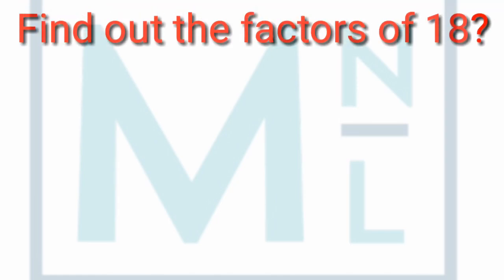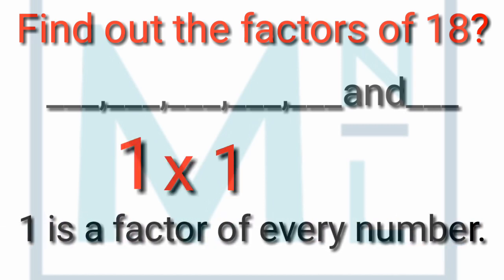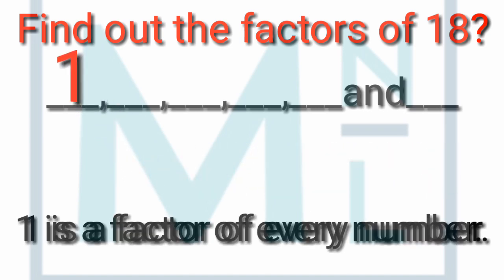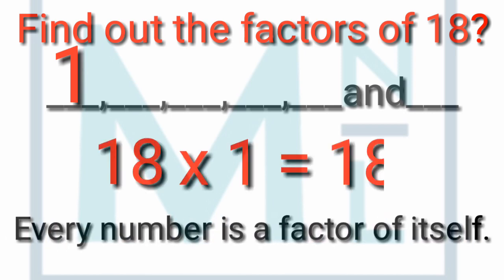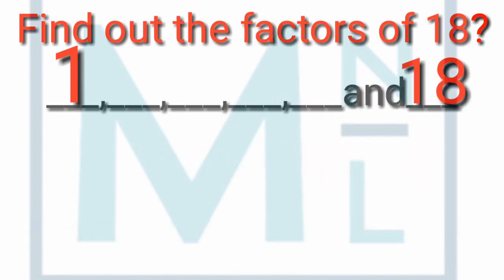Find the factors of 18. The question asks us to find the factors of 18 — or in other words, in which tables does 18 appear? According to the rules, 1 is a factor of everyone, so 1 times 18 is 18, meaning 1 is a factor of 18. And according to rule number 3, 18 is a factor of itself because every number is its own factor — 18 times 1 is 18, so 18 is also a factor of 18.